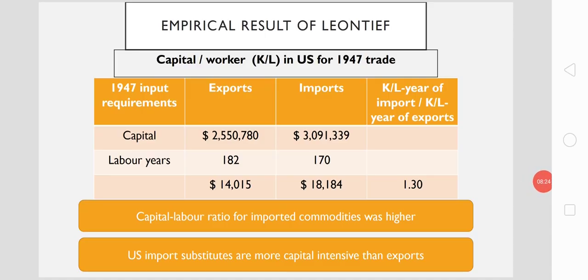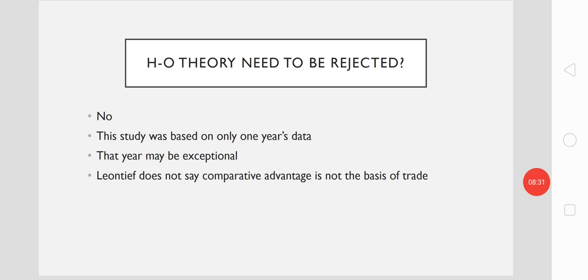It also means US import substitutes are more capital-intensive than exports. In light of the Leontief Paradox, a question will surely arise: whether the H-O theory needs to be rejected. The simple answer is no, because the Heckscher-Ohlin theory is a well-established theory in international trade, based on comparative advantage theory which is still considered the basis of trade between two nations. Heckscher and Ohlin were in fact extending comparative advantage theory into the framework of factor proportions analysis.